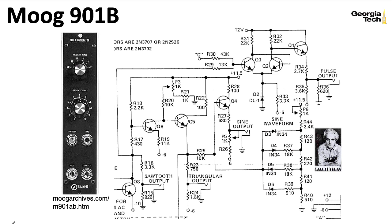There are all sorts of interesting tidbits in the Moog 901b circuit. The 901b, like every Moog design I've seen — except the Sonic 6, and presumably the Sonic 5 — has a sawtooth core. The Sonic 6 and the 5 have triangle cores, but those weren't originally Moog designs. We have a sawtooth output going to the output through a voltage divider, because the basic sawtooth from the core is a little too hot for the desired output levels, so they're cutting it down.